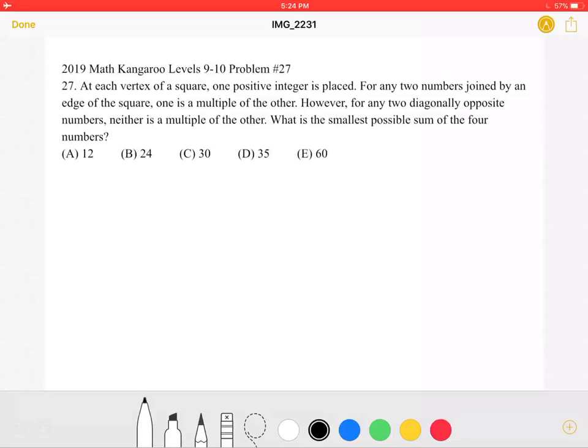This is the 2019 Math Kangaroo Levels 9-10, problem number 27. At each vertex of a square, one positive integer is placed. For any two numbers joined by an edge of the square, one is a multiple of the other. However, for any two diagonally opposite numbers, neither is a multiple of the other.